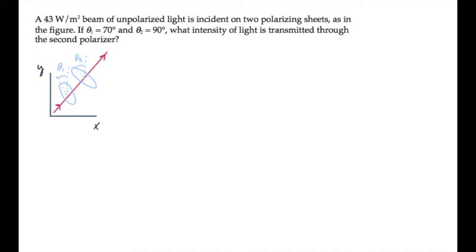The light in this problem is initially unpolarized and it passes through a system of two polarizers. We're asked to find the intensity after the second one.